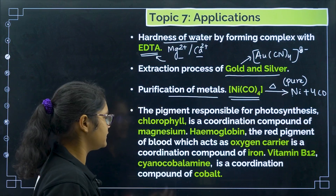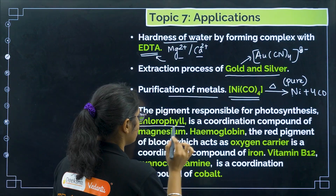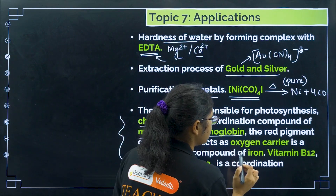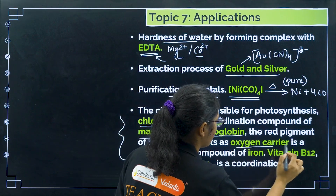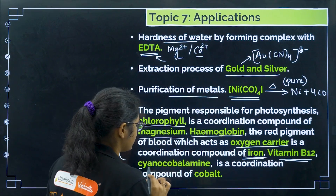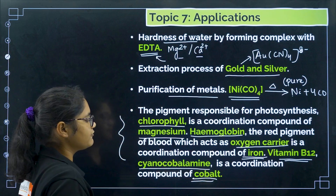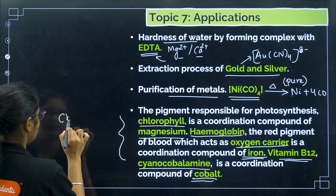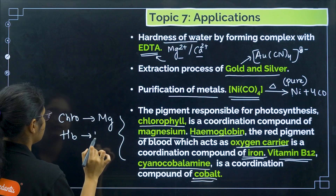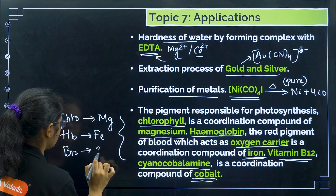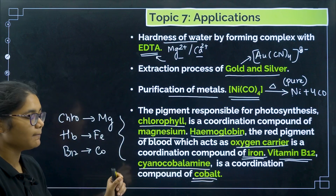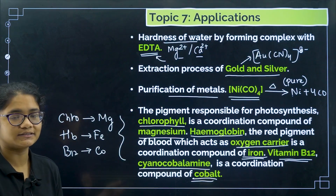In biology, coordination compounds are very important. Chlorophyll is a coordination compound bonded with magnesium. Hemoglobin, the red pigment of blood which acts as an oxygen carrier, is a coordination compound of iron. Vitamin B12, also called cyanocobalamin, is a coordination compound of cobalt. Questions have been asked repeatedly from these three: chlorophyll–magnesium, hemoglobin–iron, vitamin B12–cobalt.